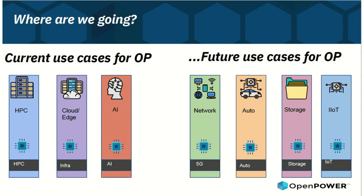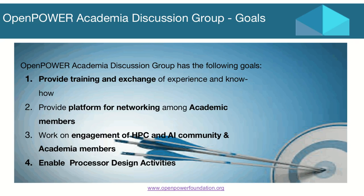For the future use cases of OpenPOWER, the main focus is on 5G networks, especially for edge, automobile, storage, and IoT. These four pillars are areas where we have been working with industries and enterprises to incorporate the features introduced as part of the Power ISA, the Power chips, and the open source materials released in the past several months.